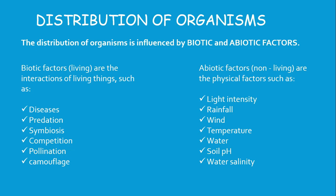Abiotic factors are the non-living component of the environment and that too will determine how organisms are distributed. Light intensity, rainfall, wind, temperature, water, and of course soil pH and water salinity will always determine the distribution of organisms.